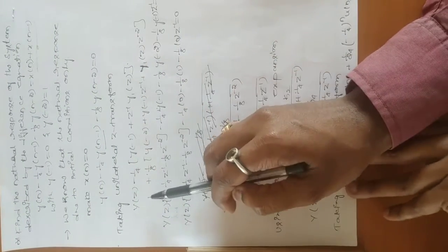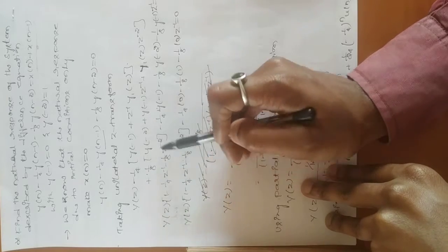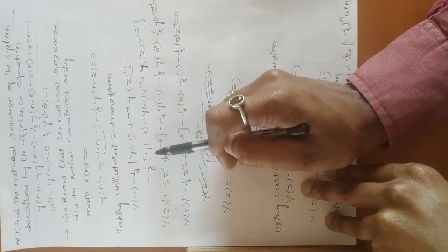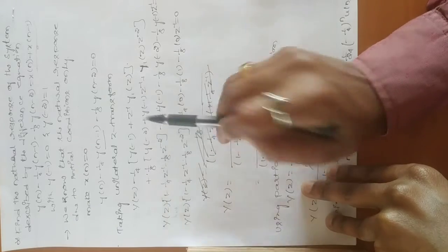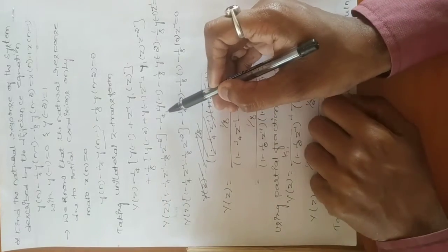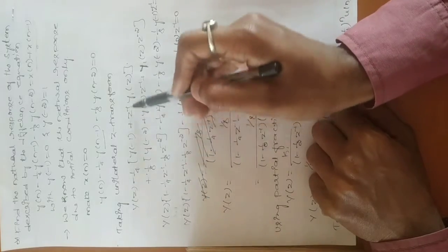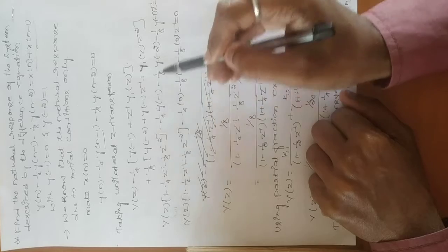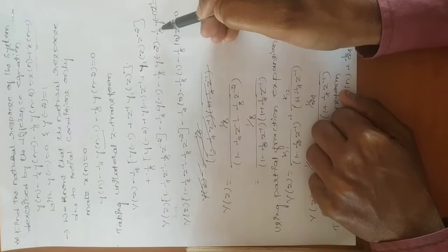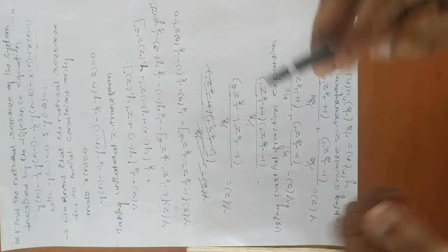After replacing, take Y(z) as common. It becomes Y(z)·[1 - (1/4)z⁻¹ - (1/8)z⁻²]. The remaining terms involve: (1/4)y(-1) - (1/8)y(-2) - (1/8)y(-1)·z⁻¹. Now apply the initial conditions given: y(-1) = 0 and y(-2) = 1.